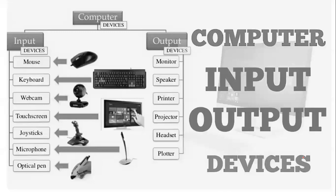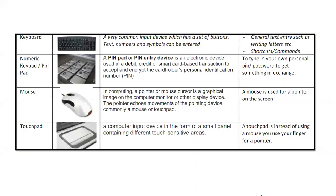Now let's come to the input and output devices of the computer. We have two categories: input devices and output devices. Input devices include mouse, keyboard, webcam, touchscreen, joystick, microphone, and optical pen. Output devices include monitor, speakers, printer, projector, headsets, and plotter.